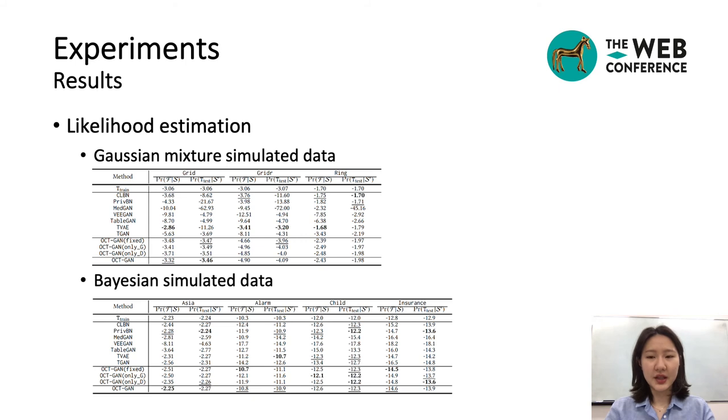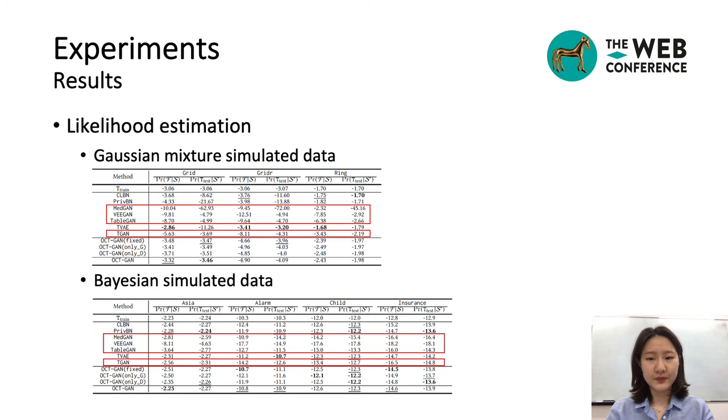First, we synthesized the data with pre-trained model and calculated likelihood of fake sample given real sample and vice versa. On the simulated dataset using Gaussian mixture model, CLBN and TVBN show fluctuating results. TVAE shows good performance for likelihood of fake data given real data on some cases. But for likelihood of real data given fake data, it shows worse performance than the other models, which means mode collapse. However, OCTGAN shows reasonable performance in general. Also, when compared with other GAN-based models, OCTGAN outperforms all the other models.